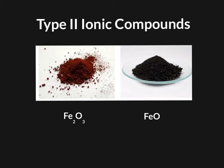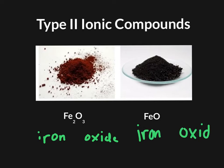If we take a look here, we have two different compounds, Fe2O3 and FeO. According to our rules that we have right now for Type I compounds, they both would be called iron oxide. And we really just can't have that, can we?